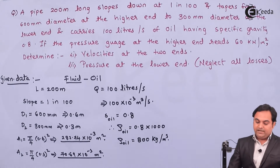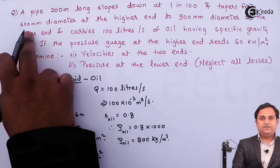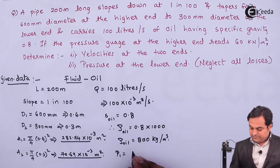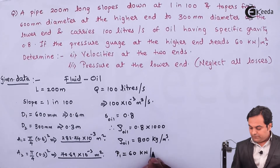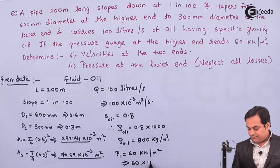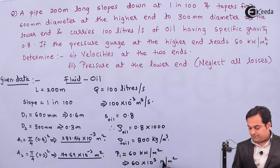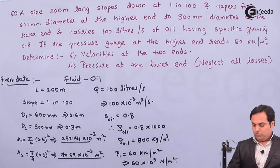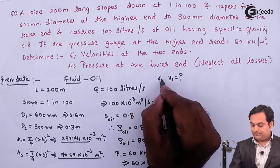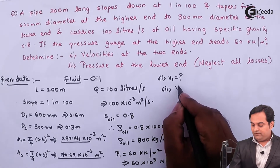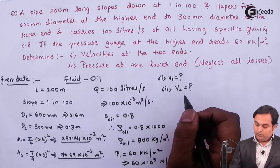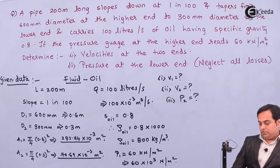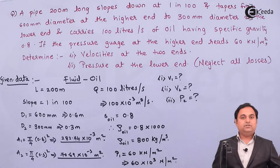The pressure gauge at the higher end — section 1, where diameter is 600 mm — reads p1 = 60 kN/m² = 60 × 10³ N/m². We need to find velocity v1 and velocity v2 at the two ends, and pressure p2 at the lower end, neglecting all losses.